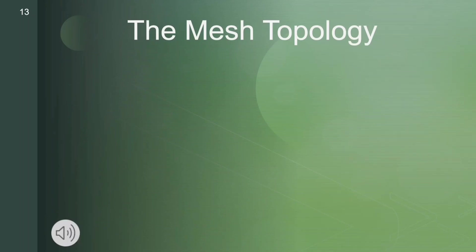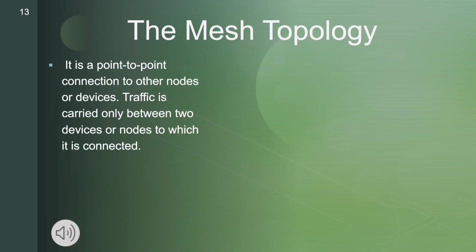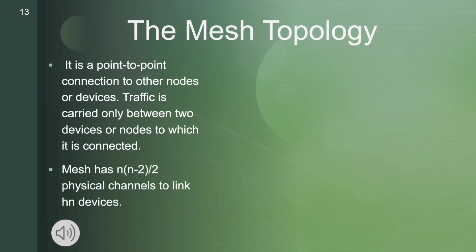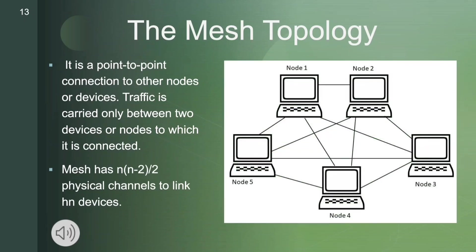Now let's discuss the mesh topology. It is a point-to-point connection to other nodes or devices. Traffic is carried only between the two devices or nodes to which it is connected, as you can clearly see in the diagram.